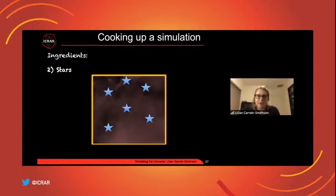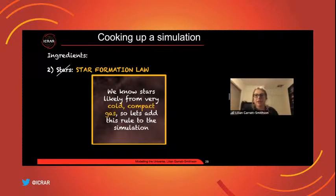So another thing we might want to include in our simulation are stars. So again, we can put these in just as individual particles. And these are actually easier than the gas to model because they are individual objects, which means that they interact through gravity, but they don't, they're not a fluid. They don't have to follow the SPH equations of motion as a fluid would. Or alternatively, maybe we could include a star formation law. So we know that stars are likely formed from very cold, compact gas. So maybe we could add this as a rule in our simulation. When the gas gets to a certain kind of density, or compactness, we introduce a star particle.